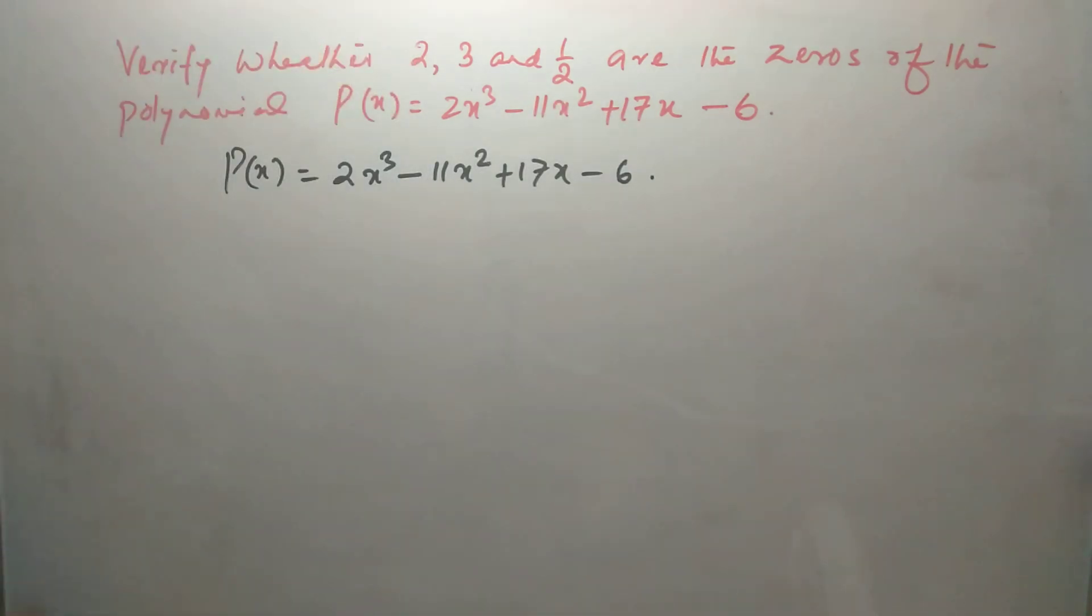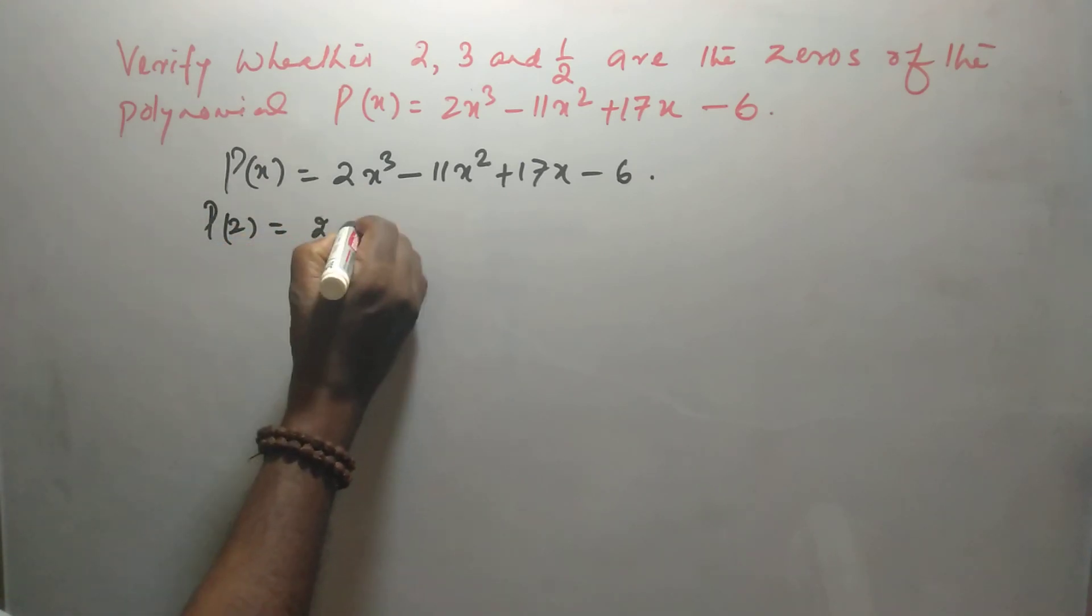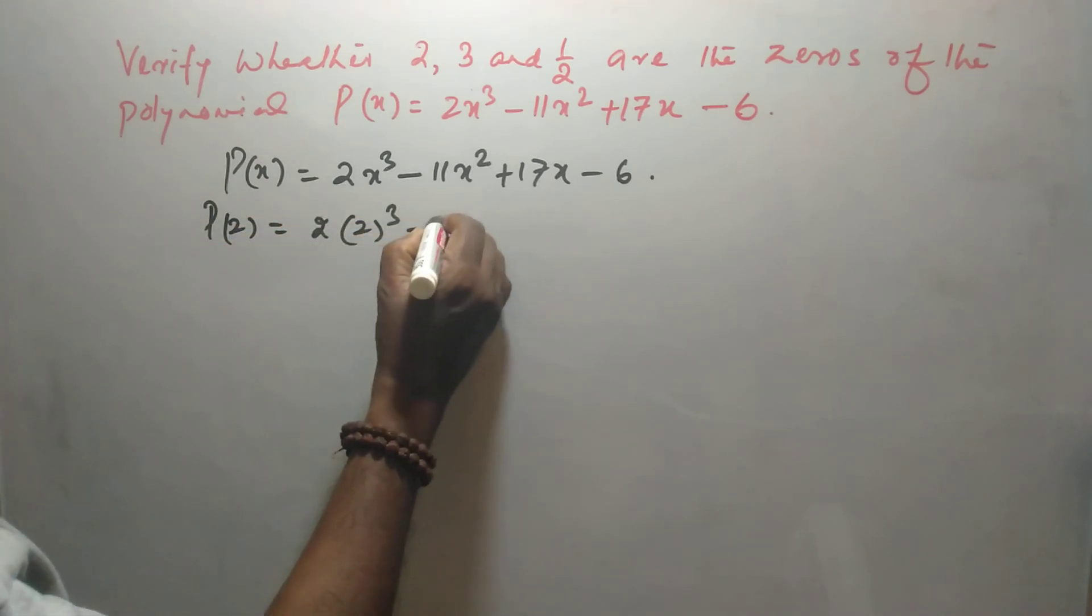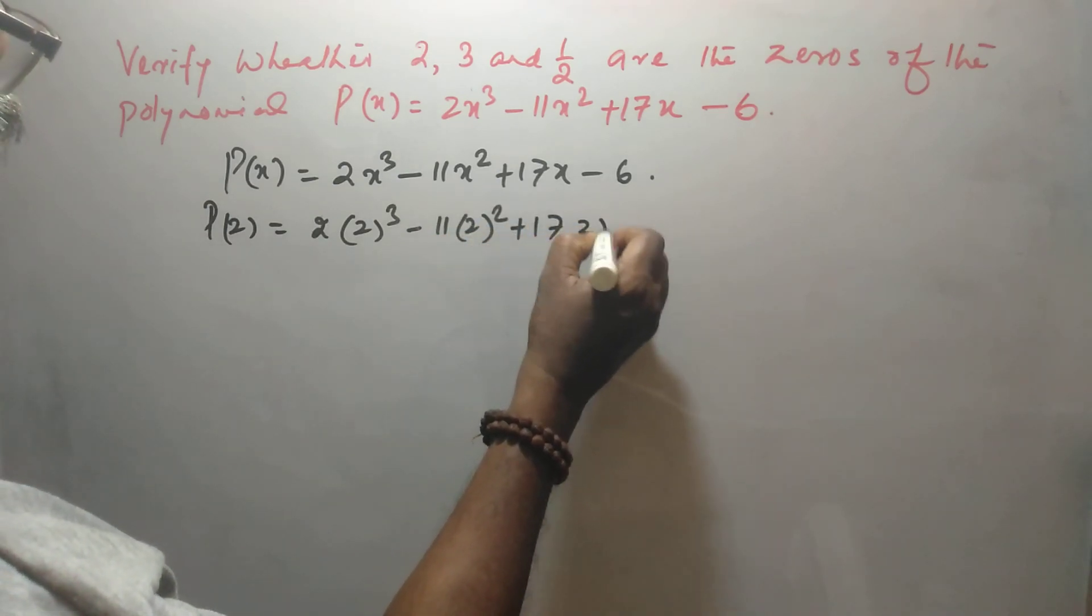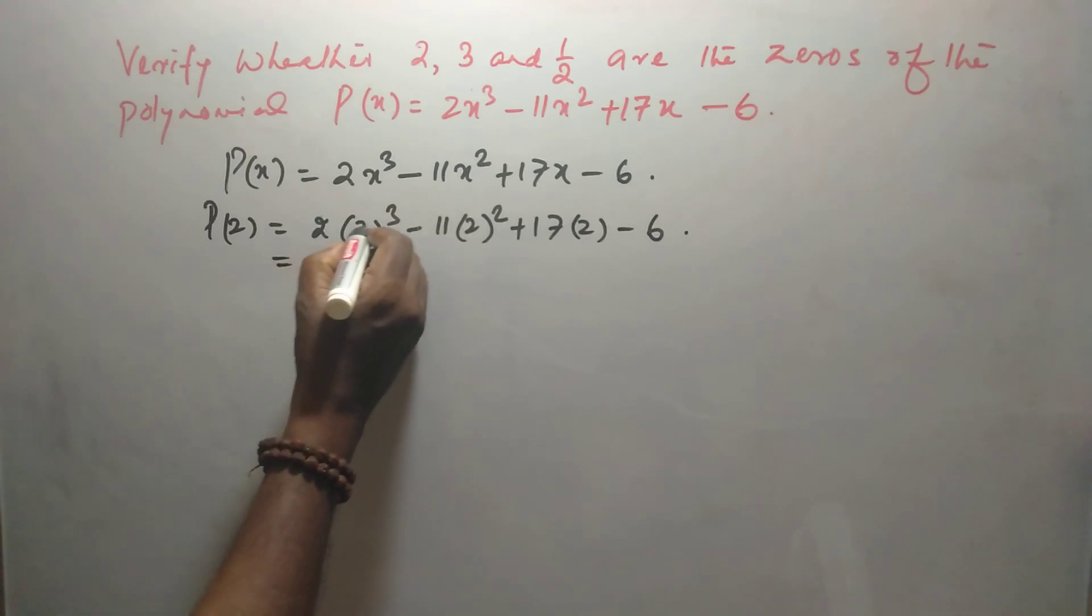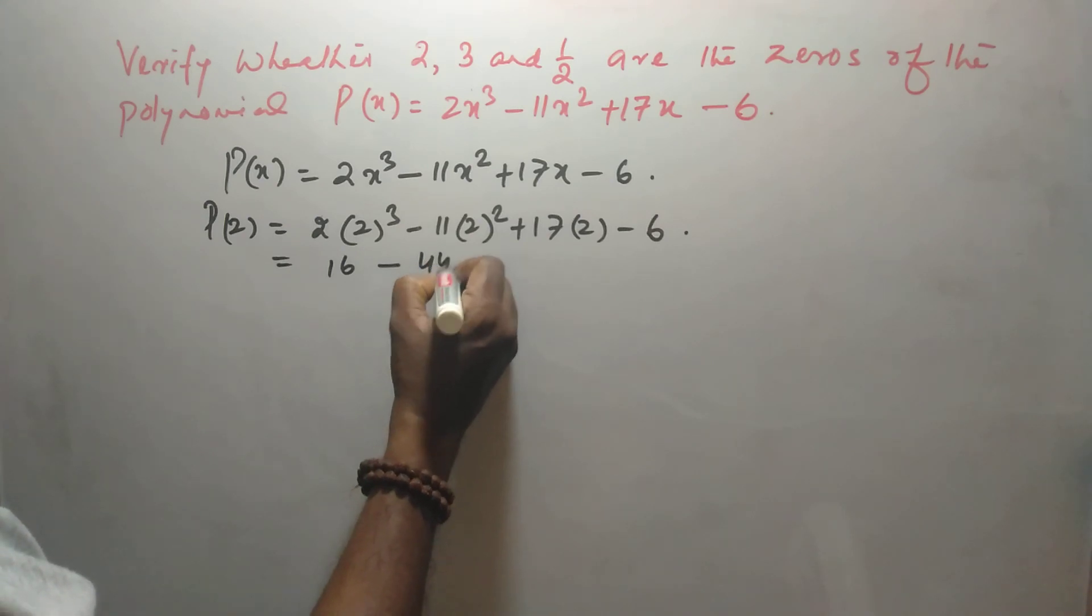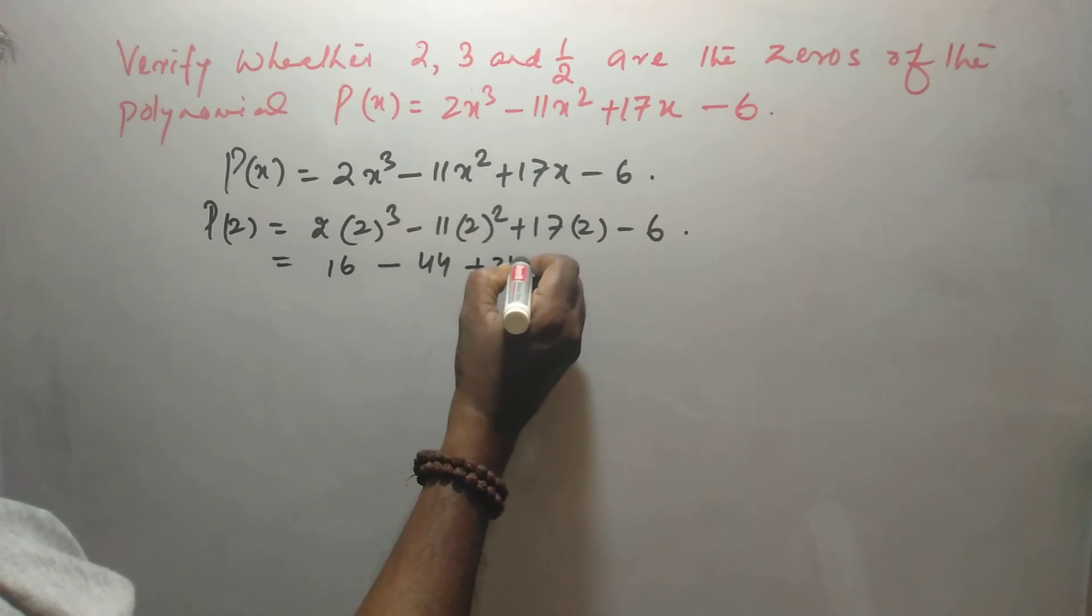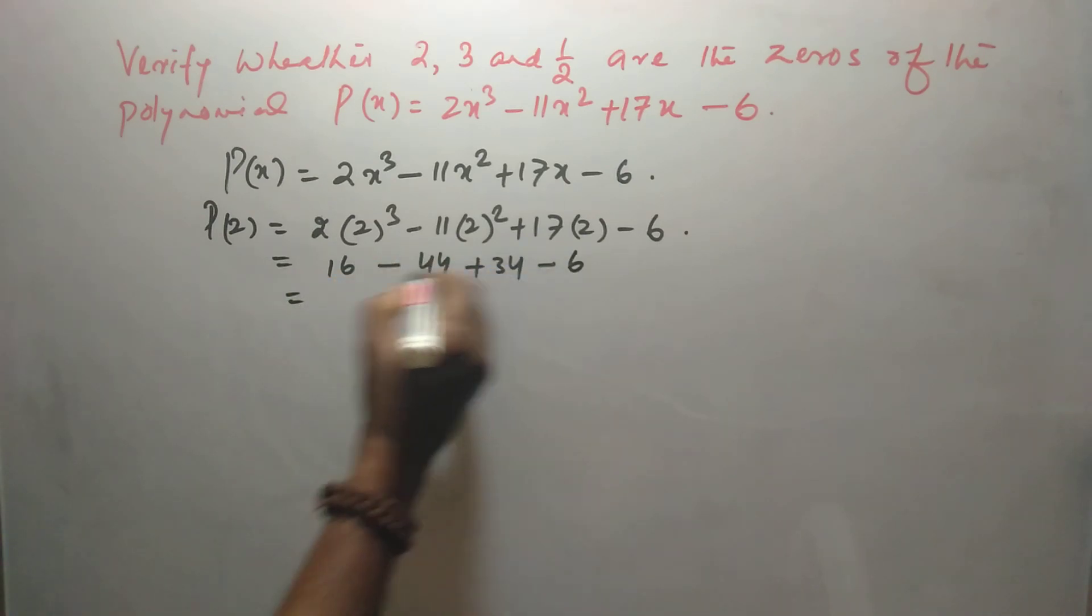Now, putting 2, so P(2) = 2(2)³ - 11(2)² + 17(2) - 6. By result, it is 16 - 44 + 34 - 6, which gives 50 - 50 = 0.